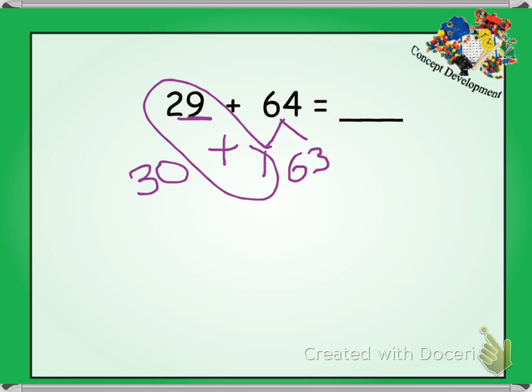Now I'm going to add my leftovers. I know that my leftovers is the 63 and the 30, because after I broke apart and added, this is what was left. So 30 and 63. Well, let's see.